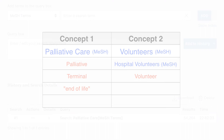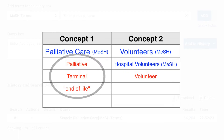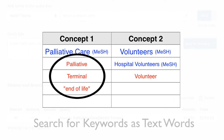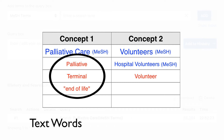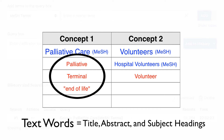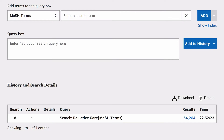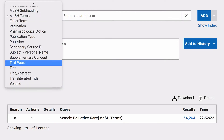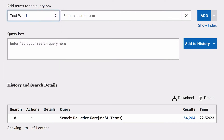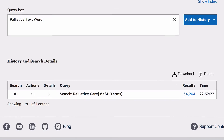The remaining search words in Concept Group 1 are keywords and we will search for these as text words, which looks for your words in the title, abstract and subject headings of articles. Click on the drop down box and choose Text Word, then repeat the same process as before in adding a search word.